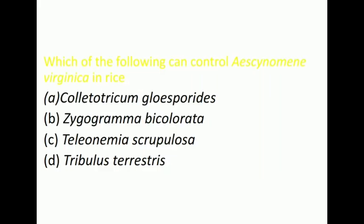Next question is: Which of the following can control Eclipta virginica in rice? Options are Colletotrichum gloeosporioides, Zygogramma bicolorata, Teleonemia scrupulosa, and Tribulus terrestris. Correct answer is Colletotrichum gloeosporioides.